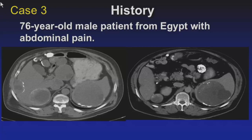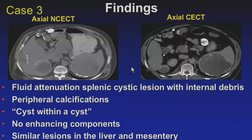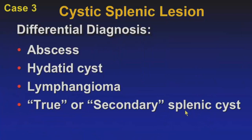Case three is a patient from Egypt with abdominal pain. Findings: a fluid-attenuation splenic cyst with higher-attenuation internal debris, peripheral calcifications within the splenic lesion, and a peripheral cyst. On non-con and contrast-enhanced images there is no enhancement. There are also cystic lesions with similar appearance in the liver and mesentery. The differential for cystic splenic lesions includes abscess, hydatid cyst, lymphangioma, and true or secondary cysts.